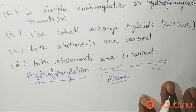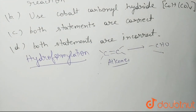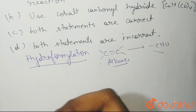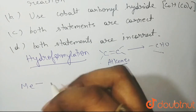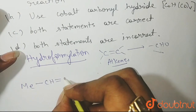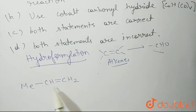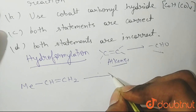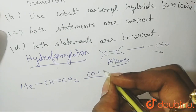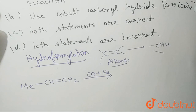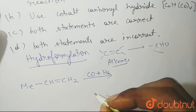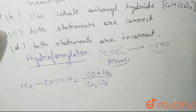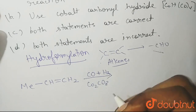In this reaction, let's take an example of an alkene — propene, written as CH₃CH=CH₂. We treat the alkene with carbon monoxide (CO) and hydrogen gas (H₂) in the presence of a catalyst which is Co₂(CO)₈ — that is octa-carbonyl dicobalt, because 8 carbonyl CO groups are present in the structure.